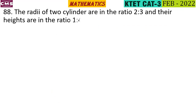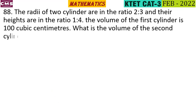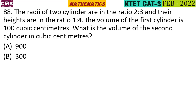The radii of two cylinders are in the ratio of 2 is to 3 and their heights are in the ratio of 1 is to 4. The volume of the first cylinder is 100 cm³. What is the volume of the second cylinder in cubic centimetres?